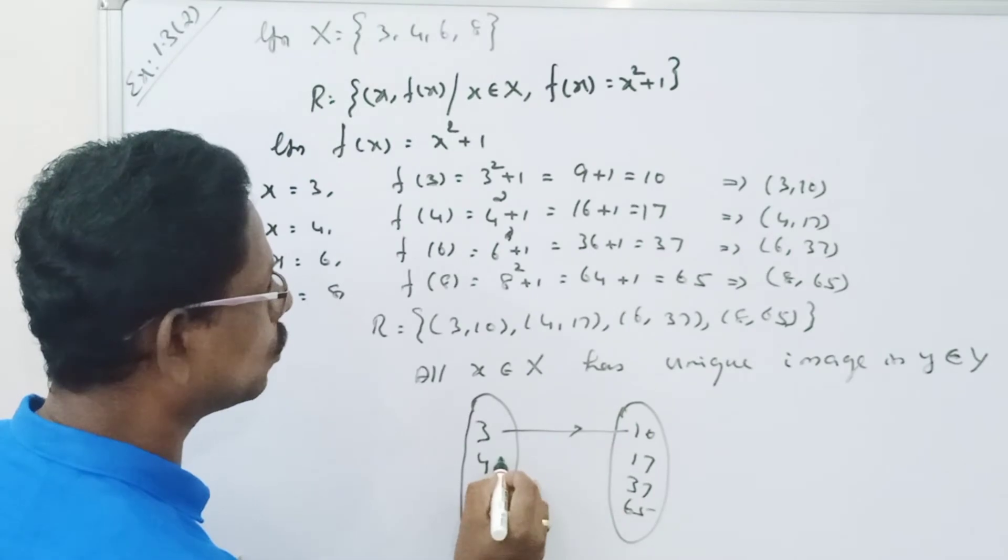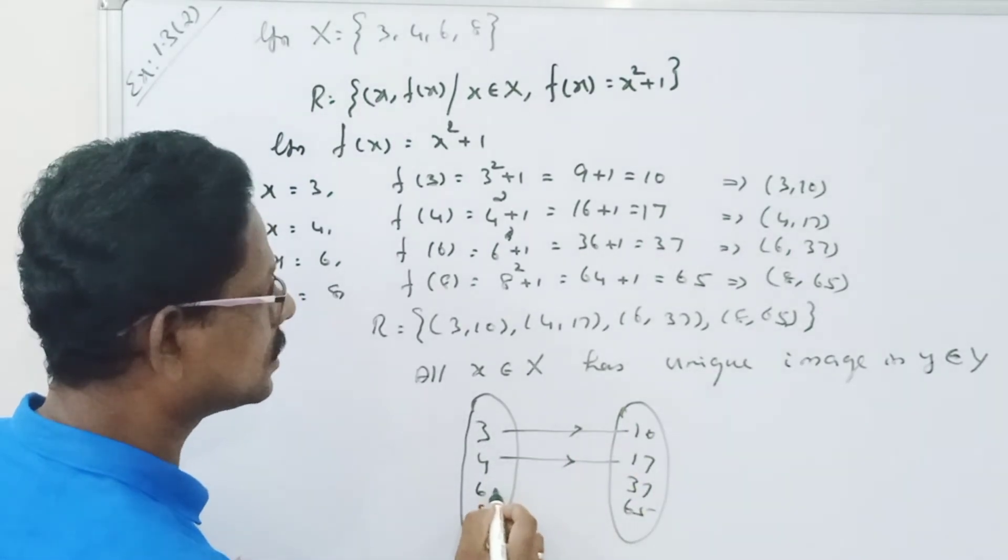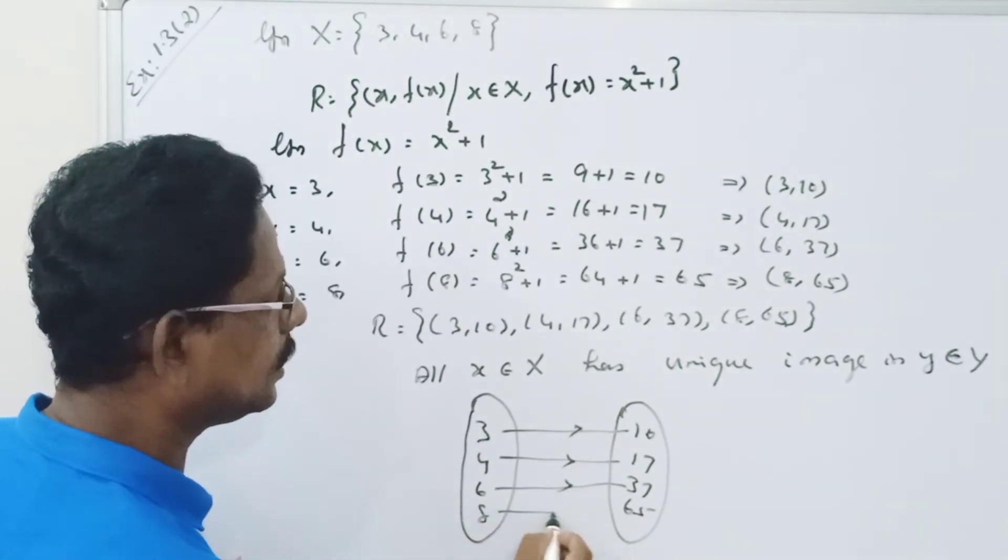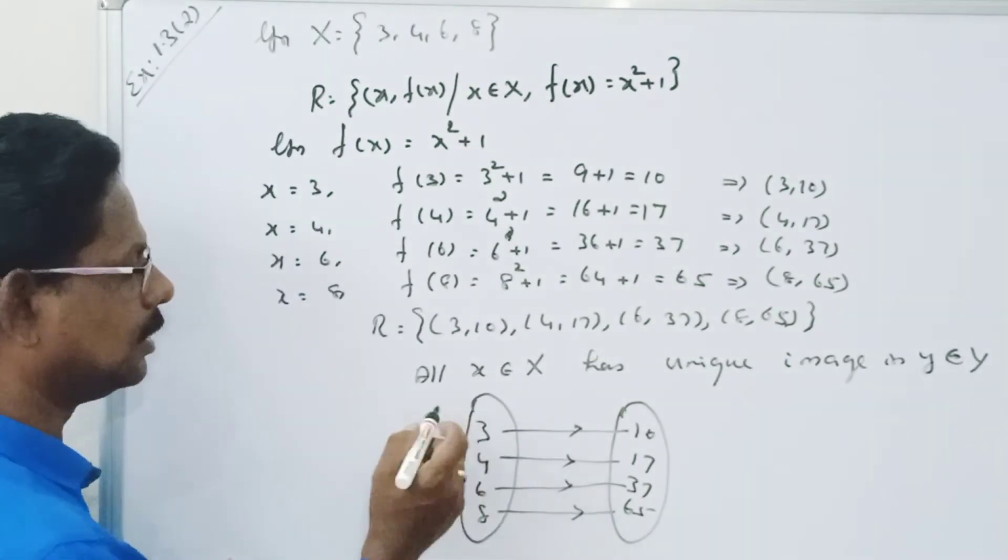So 3 maps to 10, 4 maps to 70, 6 maps to 37, 8 maps to 65. All the elements.